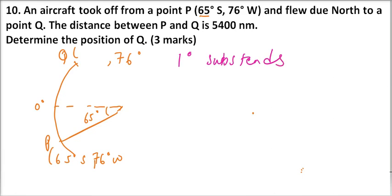...subtends 60 nautical miles. And therefore to get the angle, we say this distance is 5400 nautical miles. So if we divide, theta, that is the whole of this angle, equals 5400 divided by 60 nautical miles.